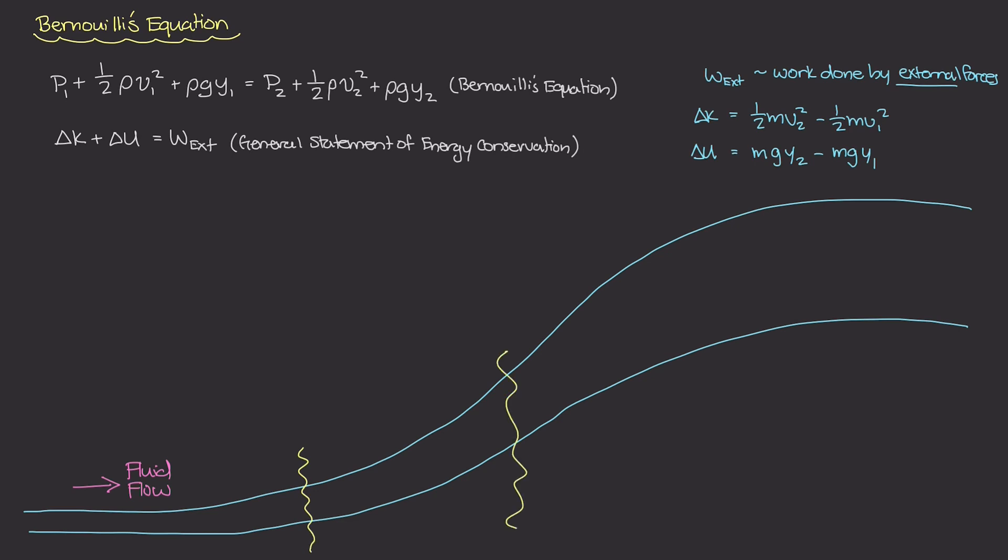Let's just define our system to be this very small section right here. So this is just a small section within this larger flow that we are going to study the potential and the kinetic energy as well as the external work being applied, and we're going to use that system and this general statement of energy conservation to come up with Bernoulli's equation.